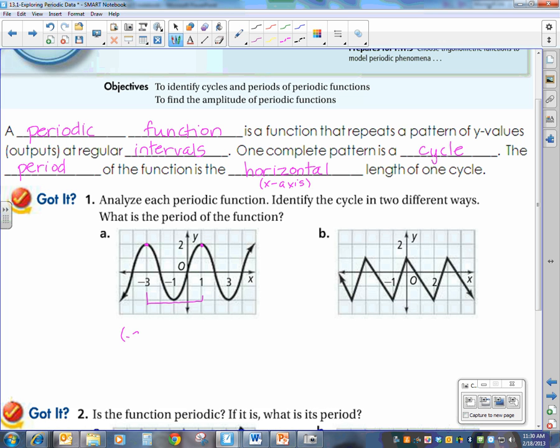So I could go between negative 3 and 1, or I could go from a minimum to a minimum, which in this case would be from negative 1 to 3, or you could look at the middle of it, starting at 0 and go to the middle of it again, and it goes to 4, so I have the point from 0 to 4. So I actually identified the cycle in three ways that time.